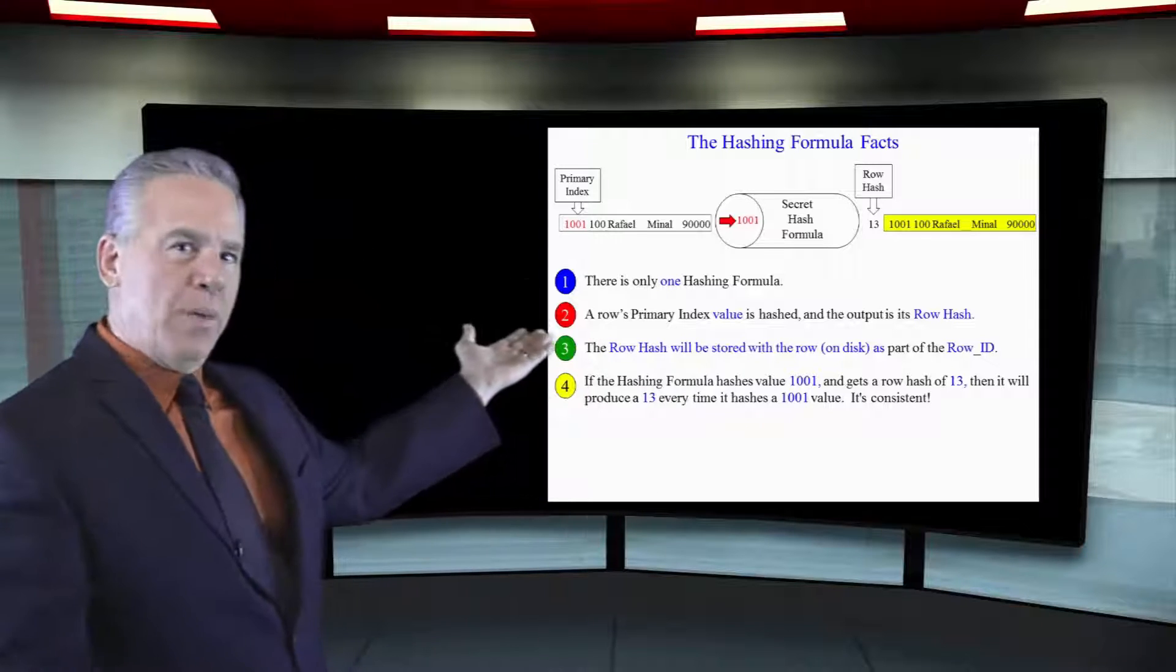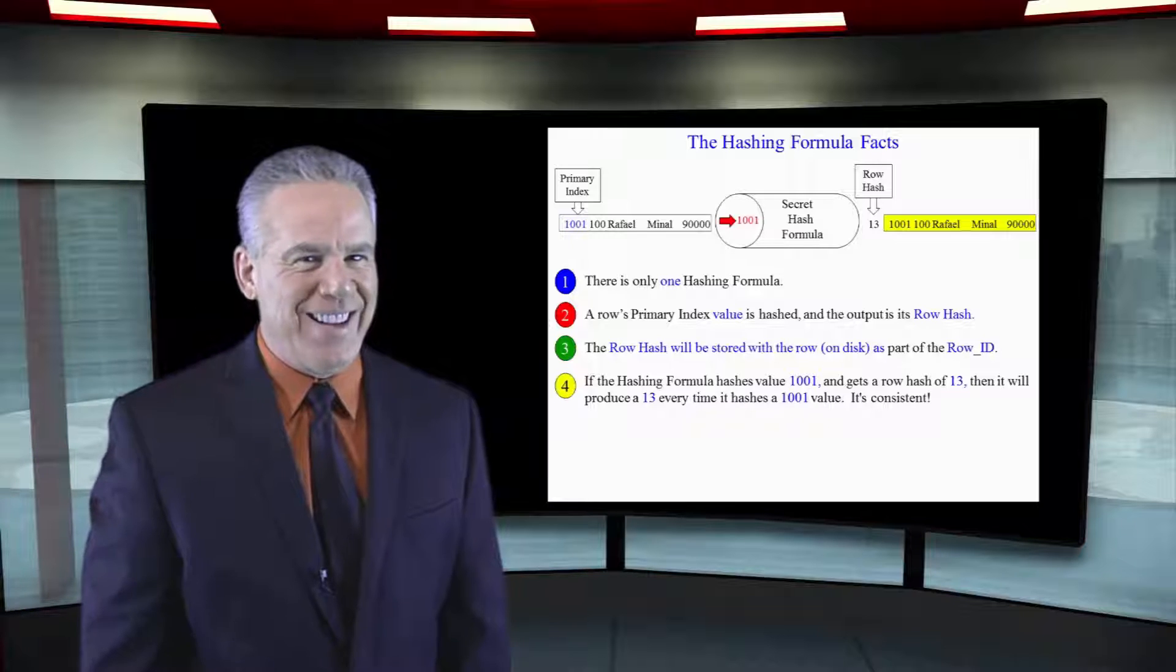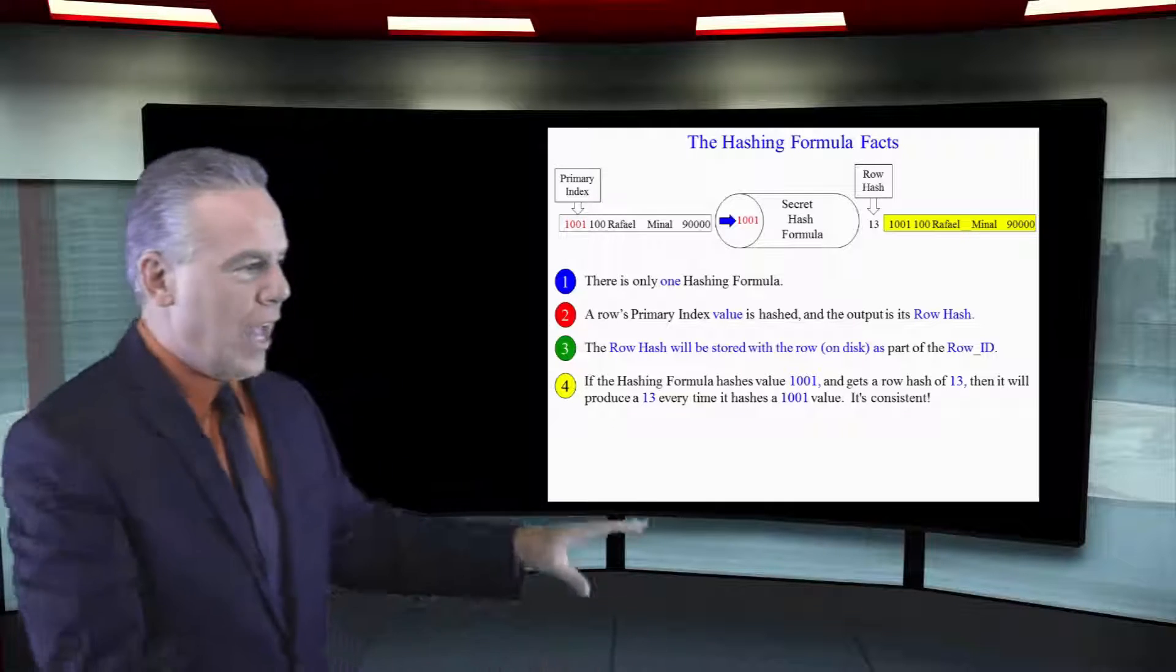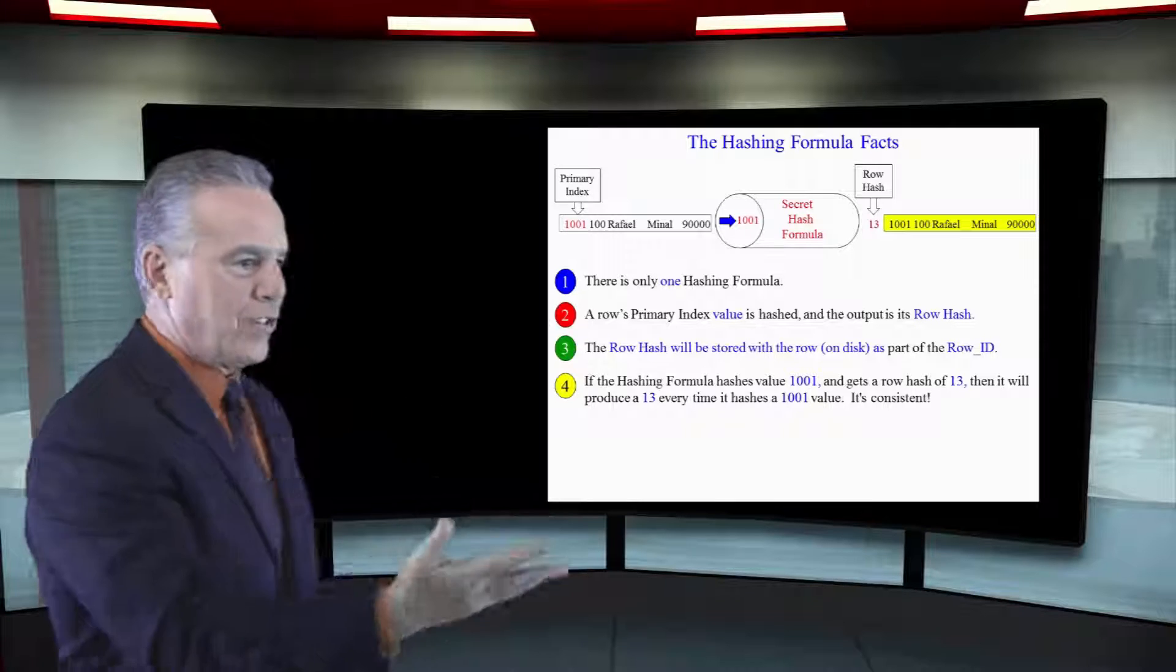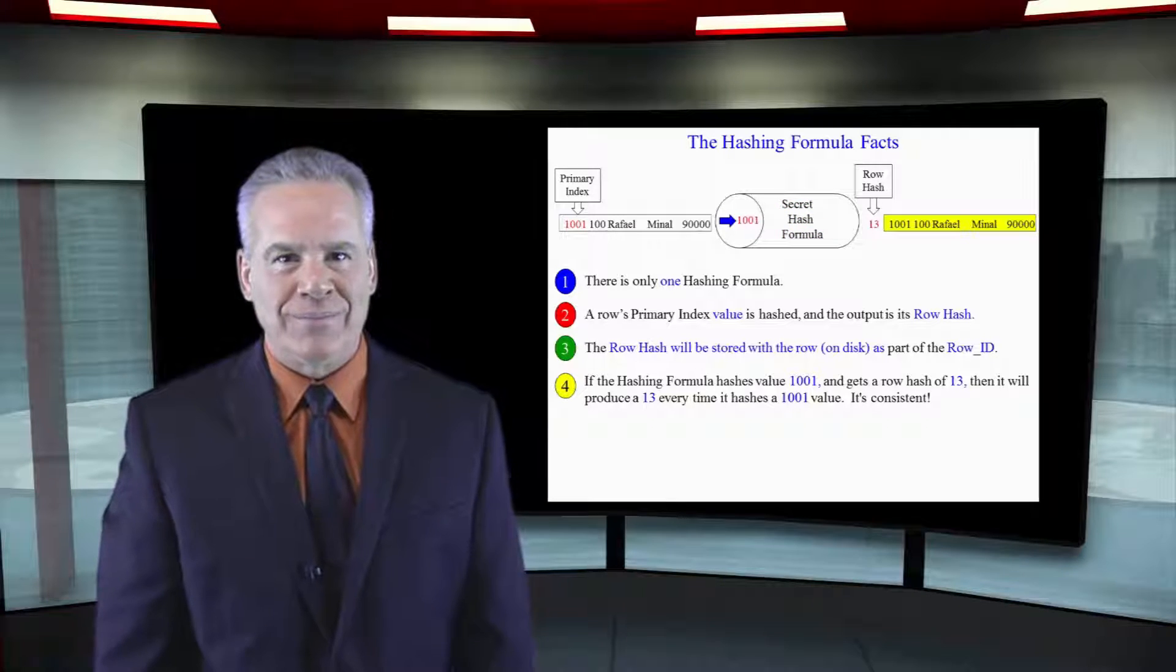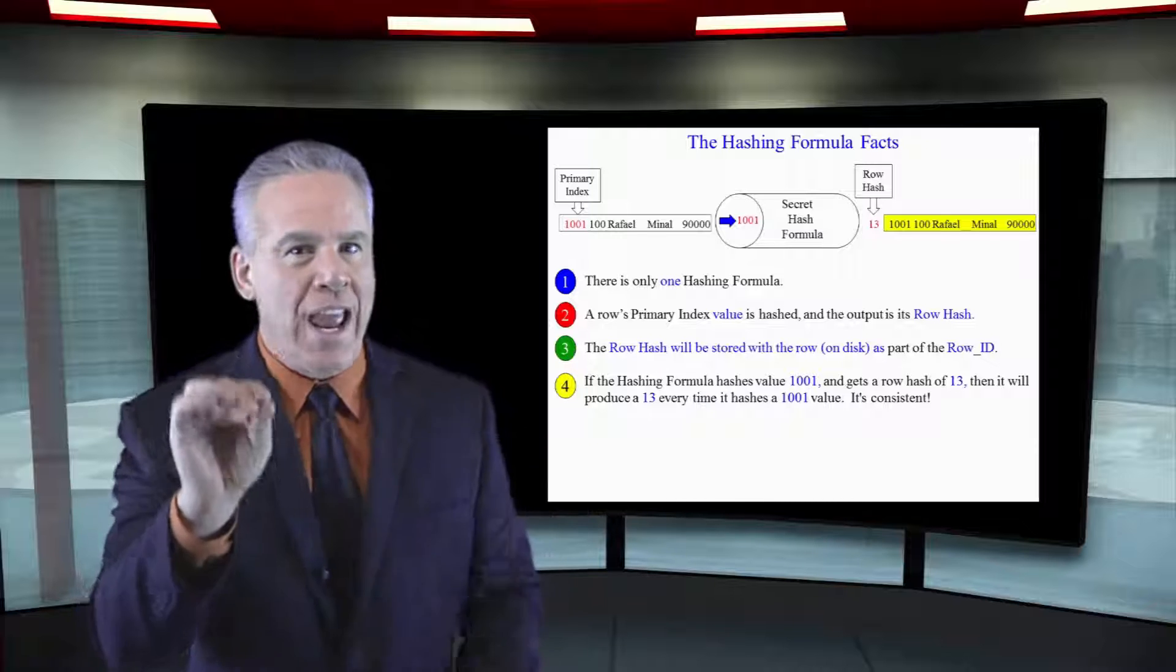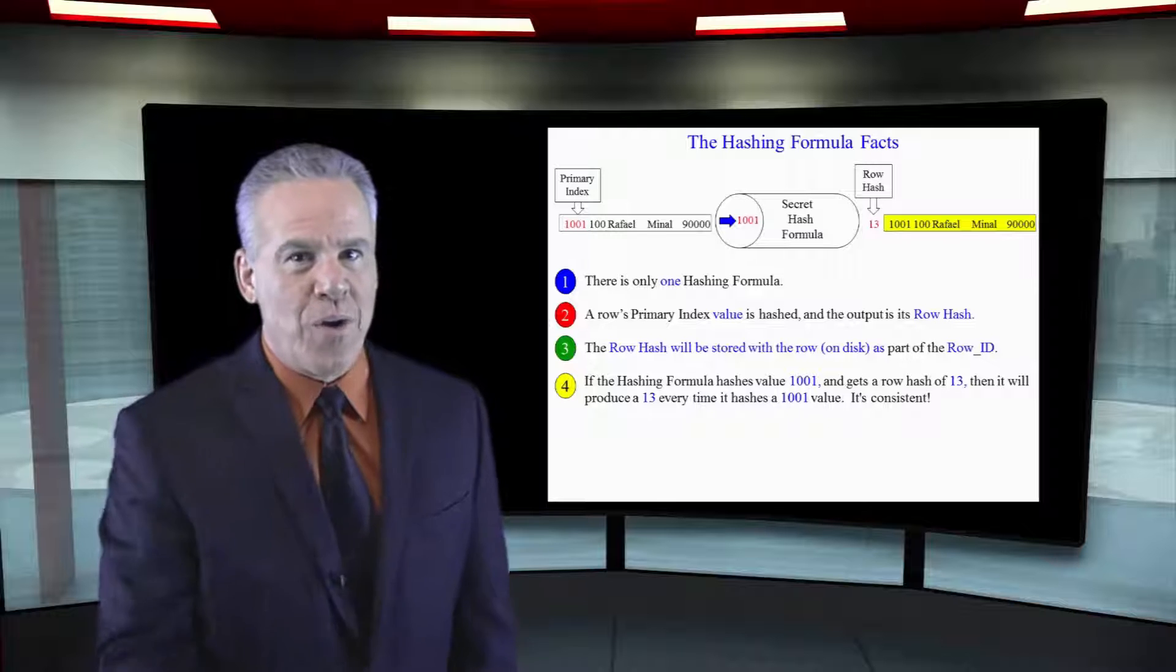We've got a row, Rafael Manal, his employee number is 1001. The employee number is the primary index. So what Teradata is going to do when they lay out that row, they're going to hash it with their secret hash formula. 1001, and the answer is a 13. That row hash will stay with that row forever, and they'll know which amp it goes on.